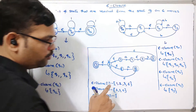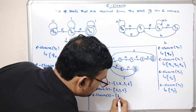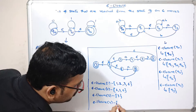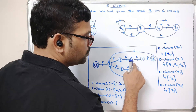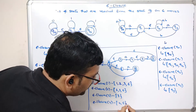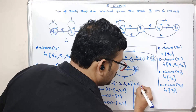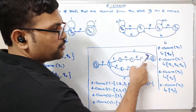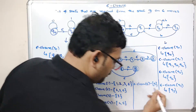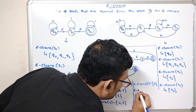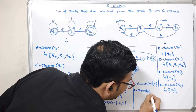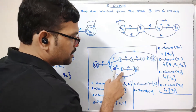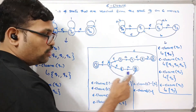Epsilon closure of 3: from state 3 there is no epsilon transition, so epsilon closure of 3 is just {3}. Epsilon closure of 4: there is one epsilon transition from 4 to 5, so epsilon closure of 4 is {4, 5}. Epsilon closure of 5: there is no epsilon transition on 5, so it is just {5}. Epsilon closure of 6: there is no epsilon transition from 6, so it is just {6}.